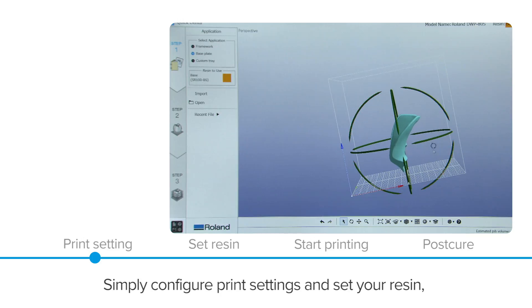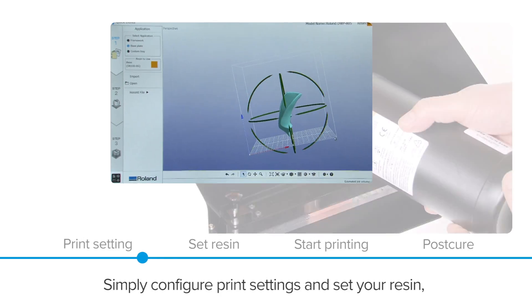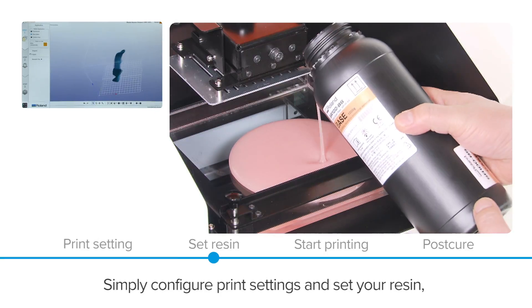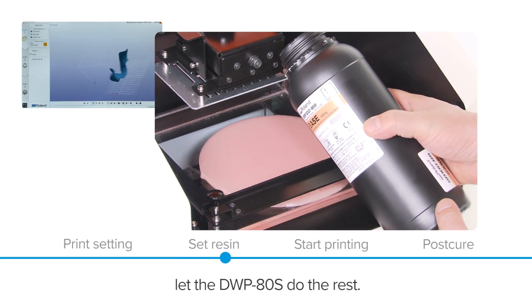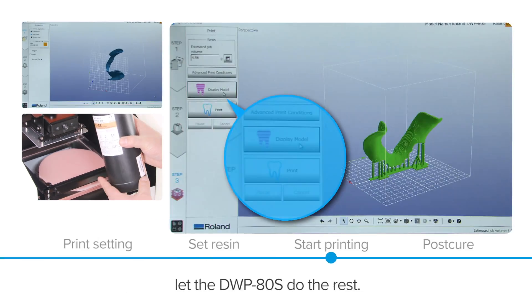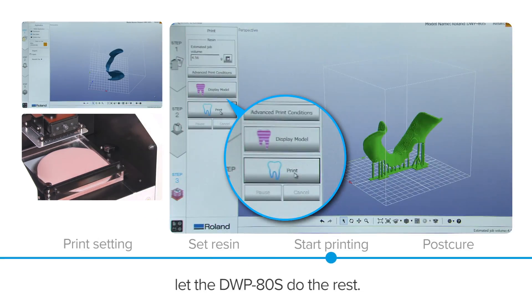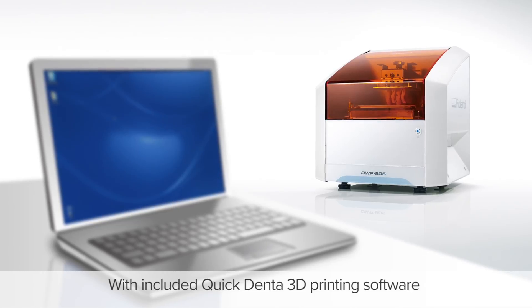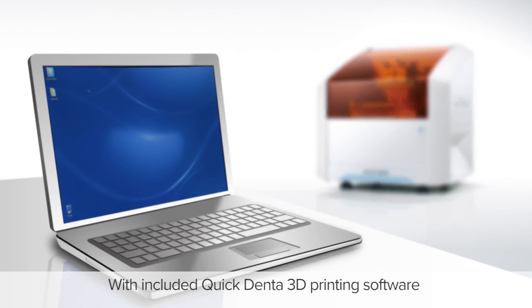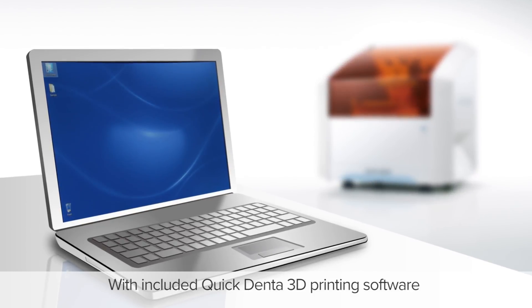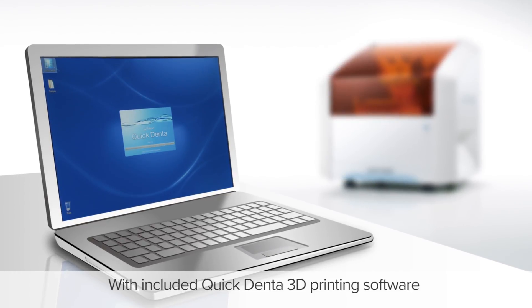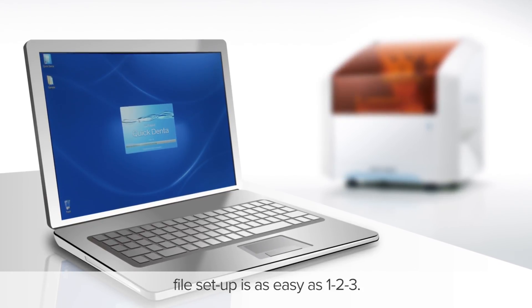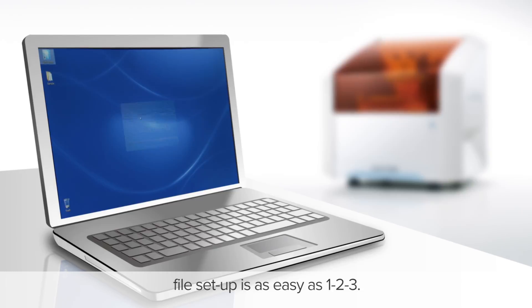Simply configure print settings and set your resin. Let the DWP ADS do the rest. With included QuickDenta 3D printing software, file setup is as easy as 1-2-3.